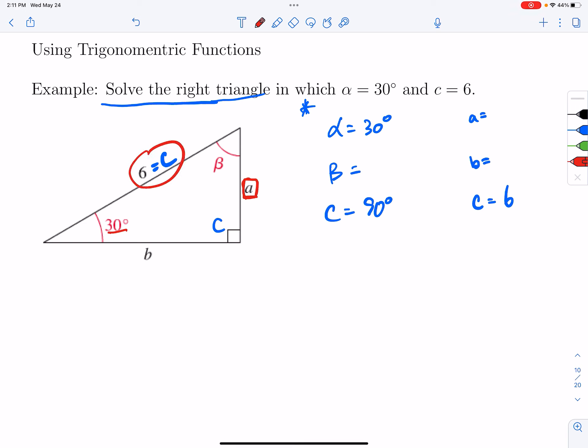So if I'm looking at angle 30, or angle alpha, which is 30 degrees, side a is the opposite, and then I have the hypotenuse. So I need a trig function that deals with the opposite and the hypotenuse, and that is sine.